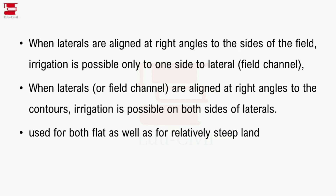When laterals are aligned at right angles to the side of the field, irrigation is possible on only one side of the lateral field channel. When laterals are aligned along the contours, irrigation is possible on both sides of the laterals.